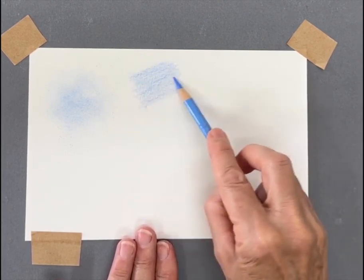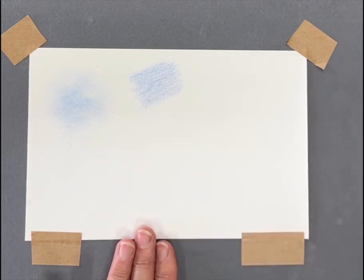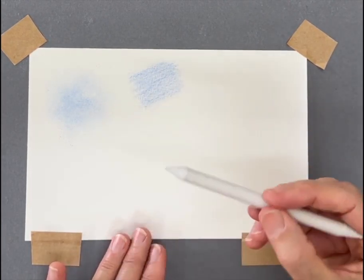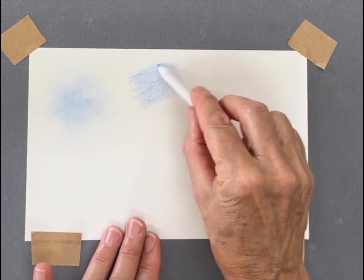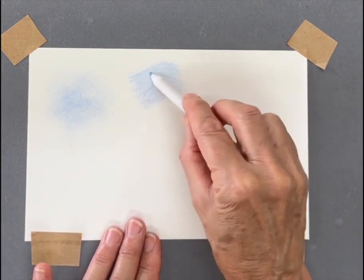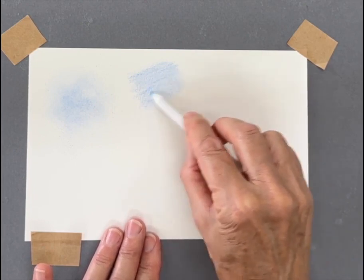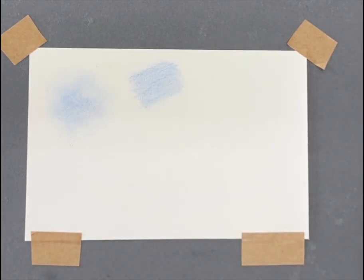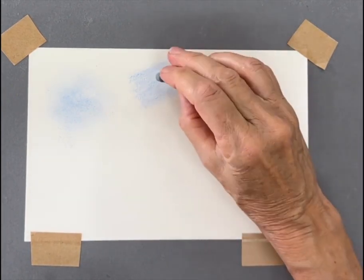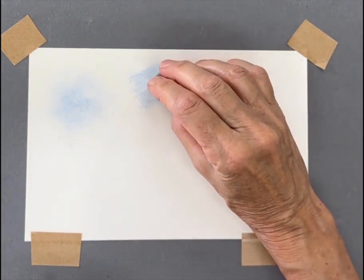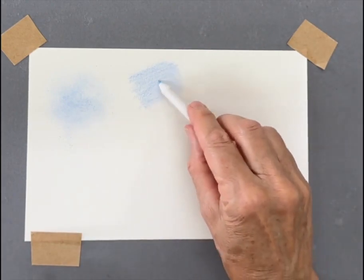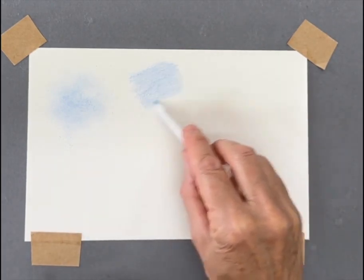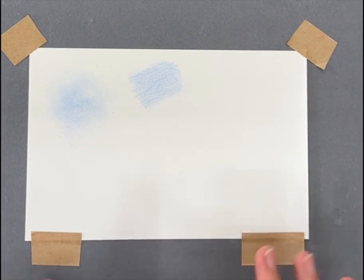You can use something like a paper stump if you wanted to smooth it out a little bit. This will work quite well. If you get little lines like that, you could always just lighten them a little bit with your kneadable eraser, smooth them out a little bit. That's quite an effective background.